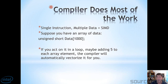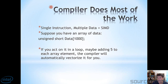So now let's take a look at an example. Suppose we have an array of data — maybe an unsigned short array called data, maybe with 1,000 elements. In your normal programming, you might do a for loop and say add 5 to each array element. And normally, in the past, for each array element it would add 5, then 5 to the next one, and 5 to the next one, and 5 to the next one.